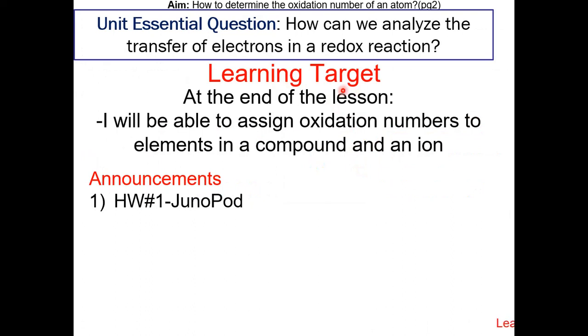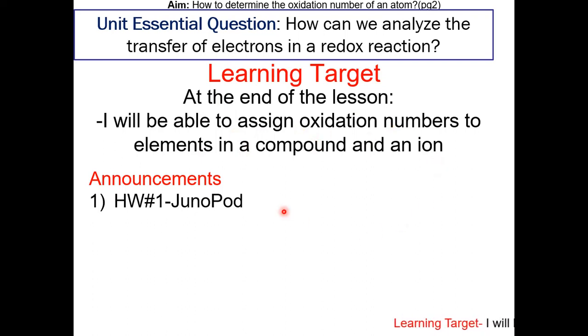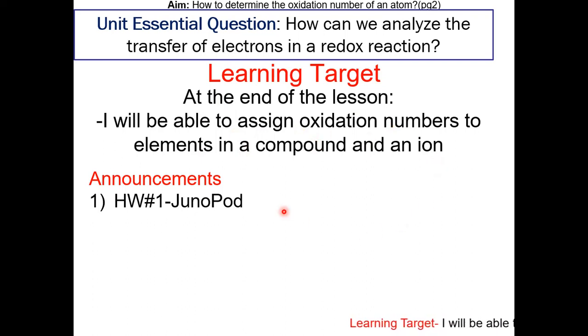Learning target: at the end of the lesson, I will be able to assign oxidation numbers to elements in a compound and in an ion, which will be number one — a Junipod assignment based off this lesson.